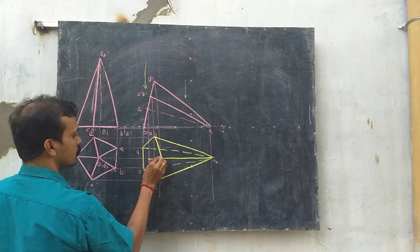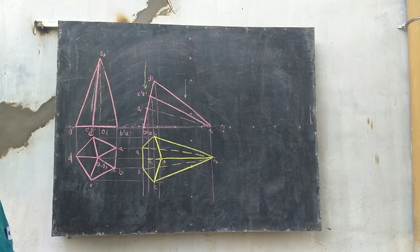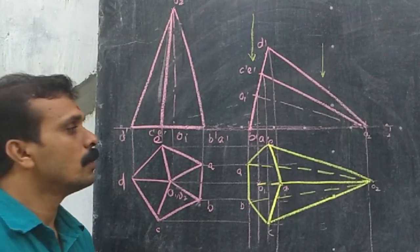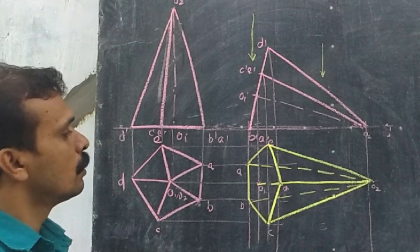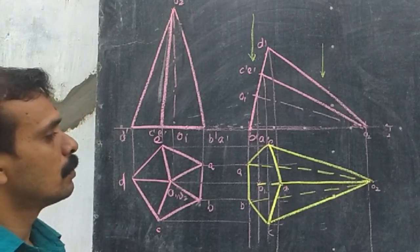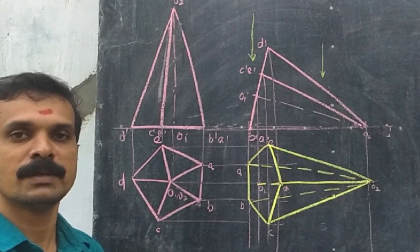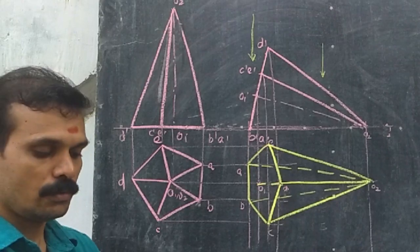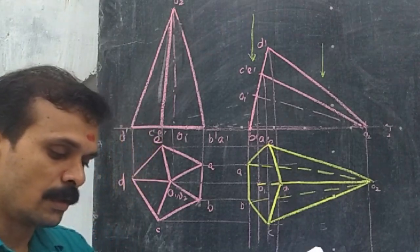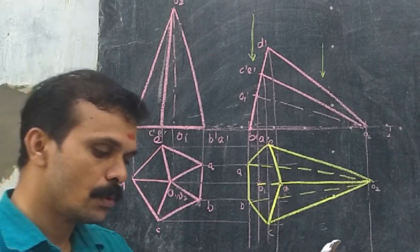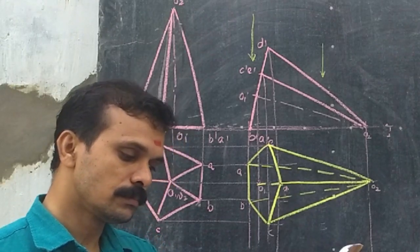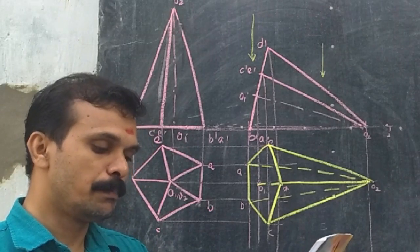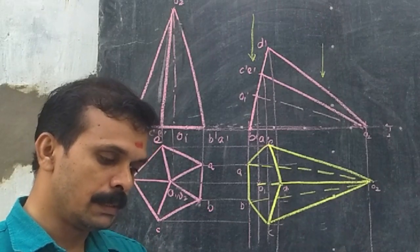This is the axis. The position of the solid has been completed. Now read the question — it is cut by a section plane perpendicular to VP.